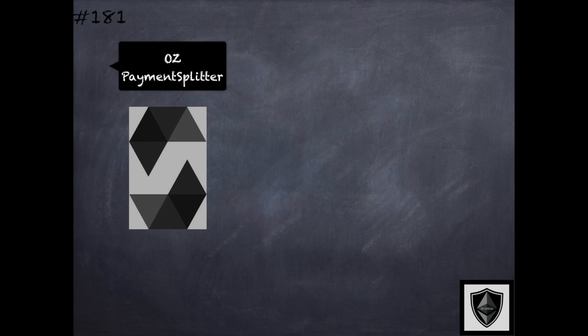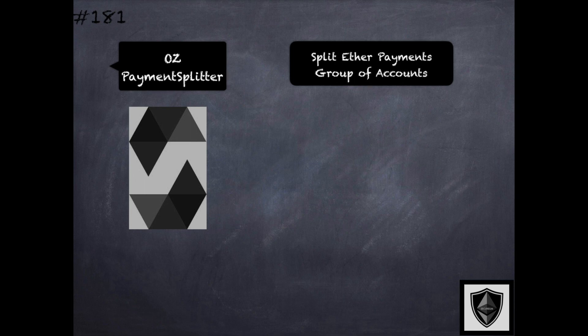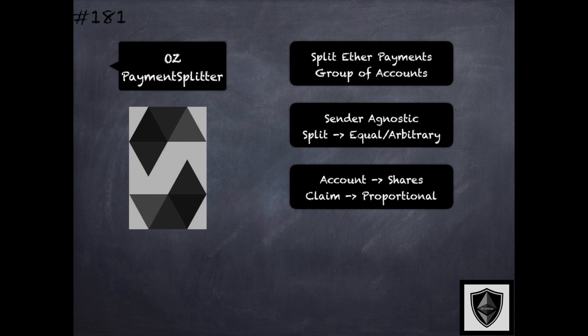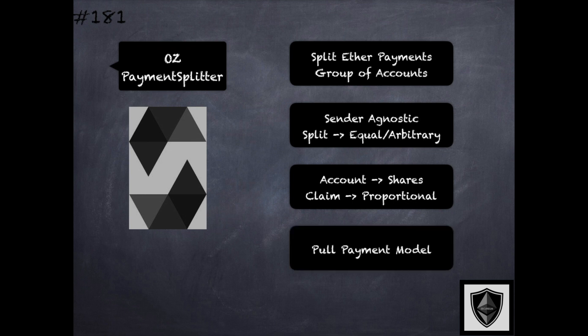The payment splitter library provides functions that allow us to split Ether payments among a group of accounts. The sender who sends Ether to this contract did not know about the splitting aspect, so it is sender agnostic. The splitting can be done in equal proportions or in an arbitrary manner by assigning a number of shares to every account. Each account can later claim an amount of Ether proportional to their percentage of total shares. This follows the pull payment model, which is much safer from a security perspective than a push payment model.